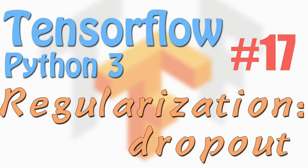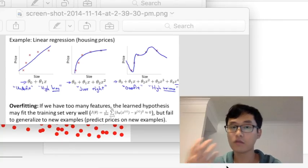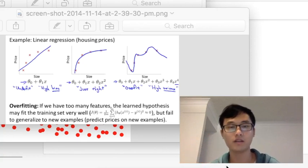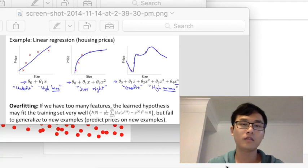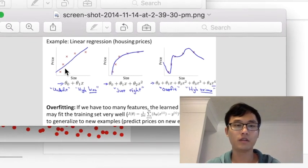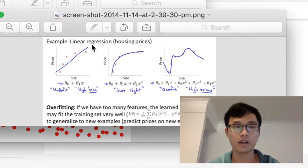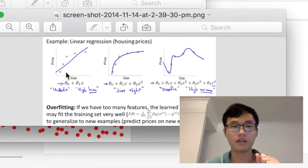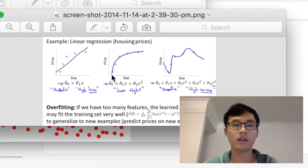Welcome back to the TensorFlow tutorial. This time we're going to talk about what is overfitting and how to solve the overfitting problem in TensorFlow. Looking at this picture, the red crosses are our data points. The first line is underfitting, which means the predicted line cannot fit into our data — the line does not fit the data very well.